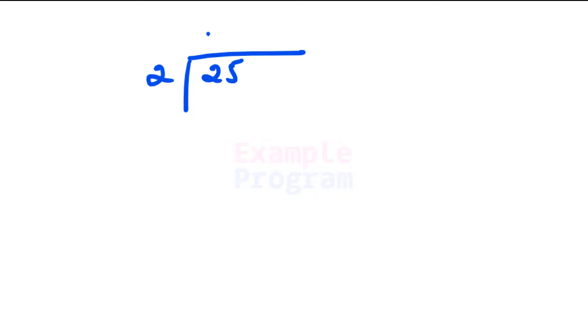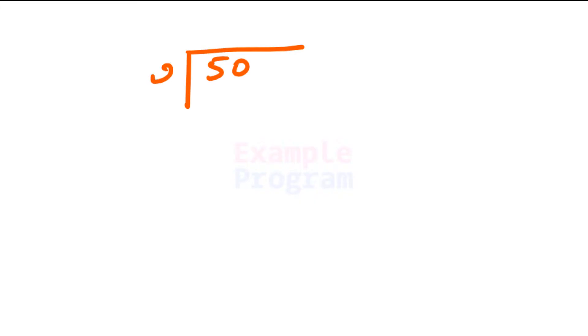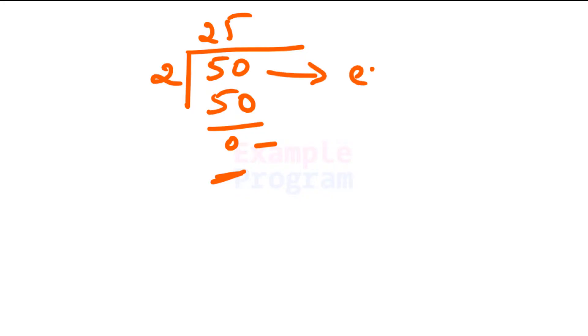For example, if I have the number 25, I have to divide it by 2 and check the remainder. When you divide 25 by 2, the remainder is 1, so 25 is an odd number. Similarly, if you have the number 50, dividing by 2 gives a remainder of 0, so 50 is an even number.